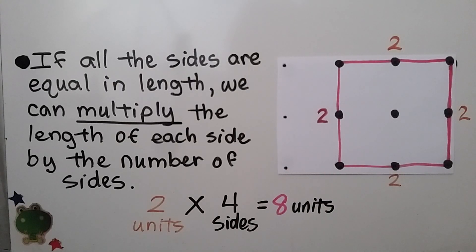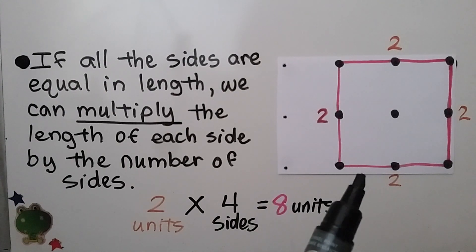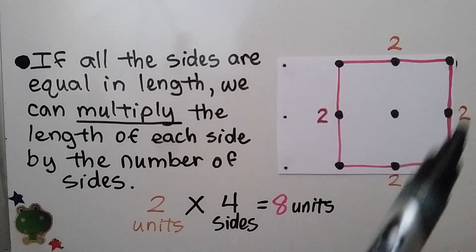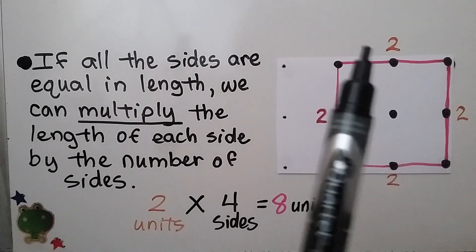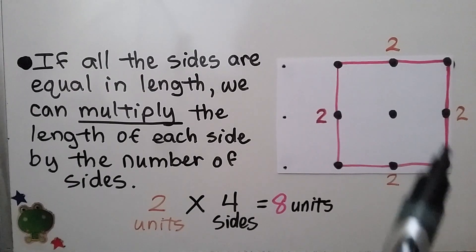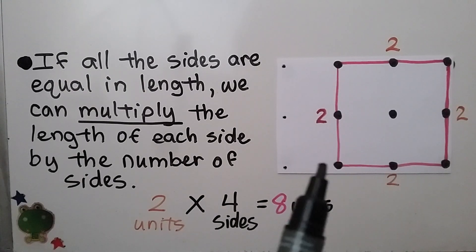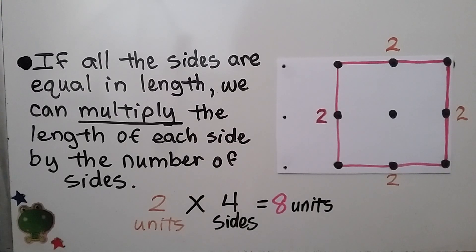If all the sides are equal in length, we can multiply the length of each side by the number of sides. Here we have a square, and a square has four sides that are all the same length. We can see that each side is two units. We can do two units times four sides, which equals eight units.